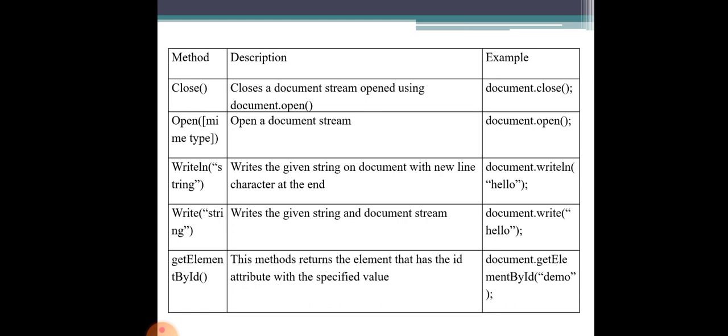Now let's review document object properties. Properties allow changes to the entire web page, while methods perform actions such as opening new lines and writing content. So that covers the document object methods and properties — thank you.